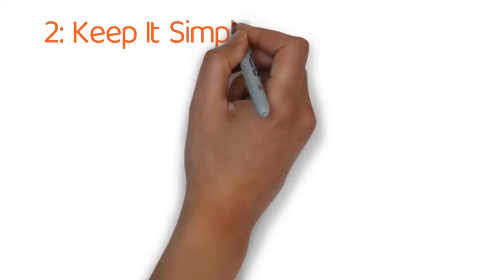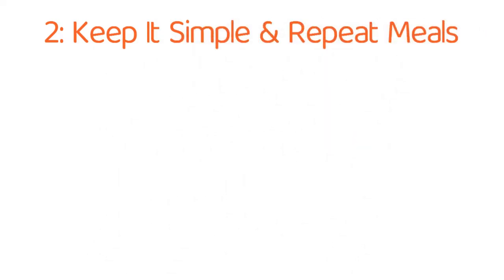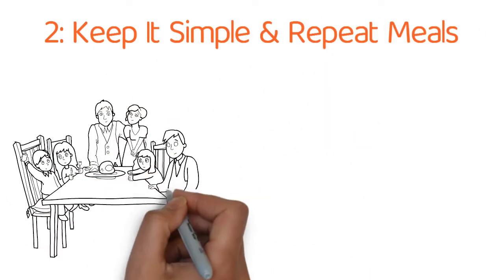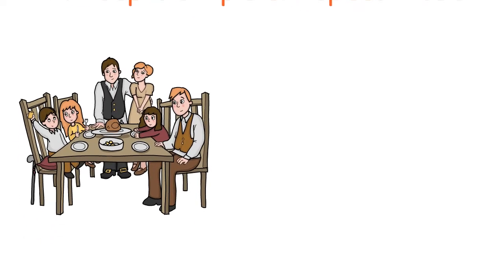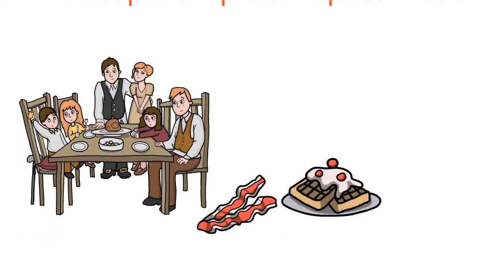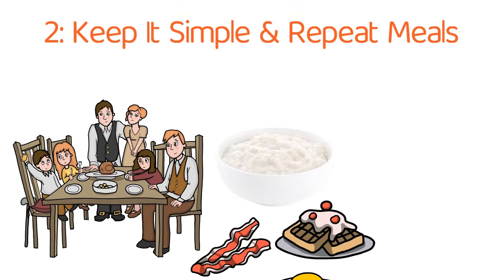Tip number two, keep it simple and repeat meals. Learn to enjoy eating simply. Instead of having a big breakfast of bacon and waffles and eggs and sausage, you might have to settle for a nice big bowl of oatmeal. And for dinner, you might only have a plate of rice and beans.